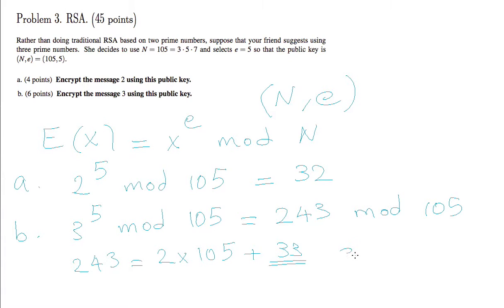In the end we say that 3 to the power 5 mod 105 is equal to 33. So these are the two final answers for the first two parts of RSA.